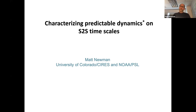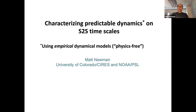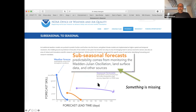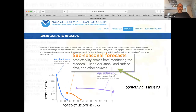I'm going to be talking about characterizing predictable dynamics. There's a little asterisk there because I'm going to use what are called empirical dynamical models, rather than what people are more familiar with in terms of physical dynamical models — in Richard Seeger's immortal phrase, these are physics-free models. I wanted to go back to this diagram that you've seen a number of times already. It's this idea of the S2S time scale and where the predictability is coming from: the MJO, land surface data, and other sources. And I can't help thinking that something is missing on that time scale, and perhaps that something is ENSO.